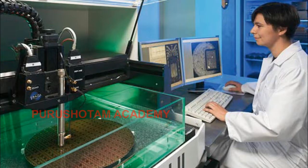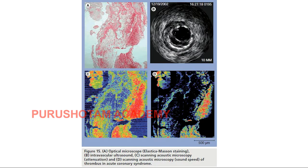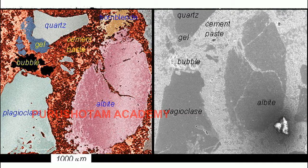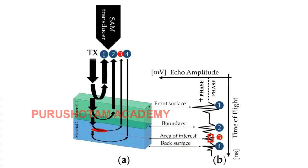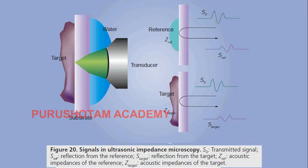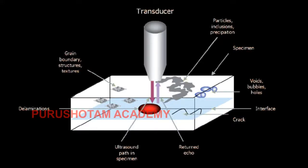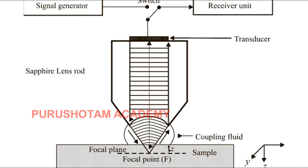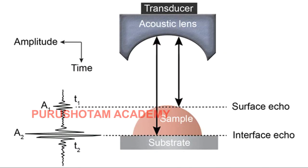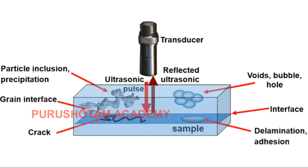Since then the technology has been developed, and the high frequencies required for Sokolov's microscope are found in the microwave systems used for radar and for satellite communications. During the 1970s, several groups of researchers in the United States employed these frequencies to build sound systems. The microscope that evolved from this effort is known as the scanning acoustic microscope.